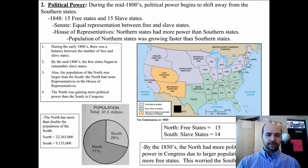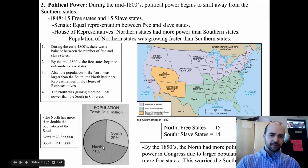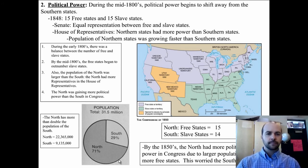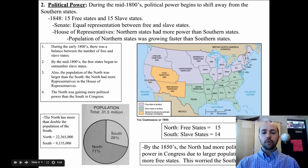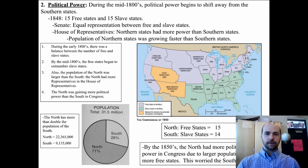The population of the country was 31 million people, but 71% of them were in the North. So by the 1850s, the North had more political power in Congress due to a larger population and more free states. This worried the South.